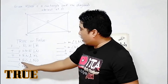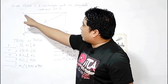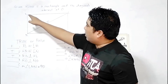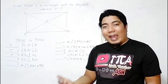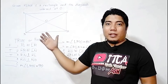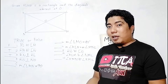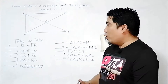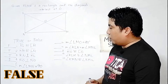Statement 4: KO and NO are perpendicular. We need to check whether there is any property stating that the diagonals of a rectangle are perpendicular to each other. There is no such property. Therefore, this statement is false.